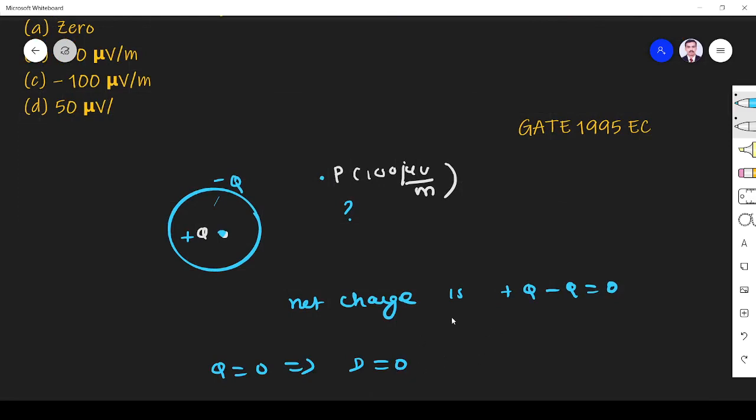Gauss's law states that electric flux passing through any closed surface is equal to charge enclosed. But net flux is zero. So electric flux density is zero, which implies electric field is also zero.